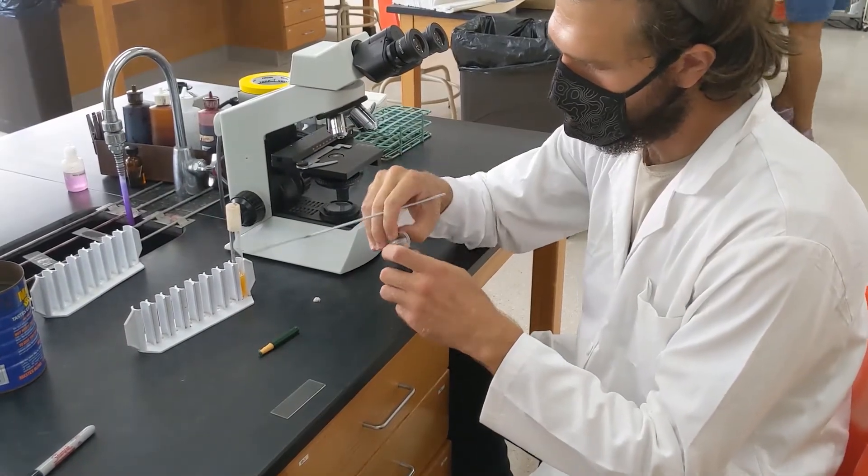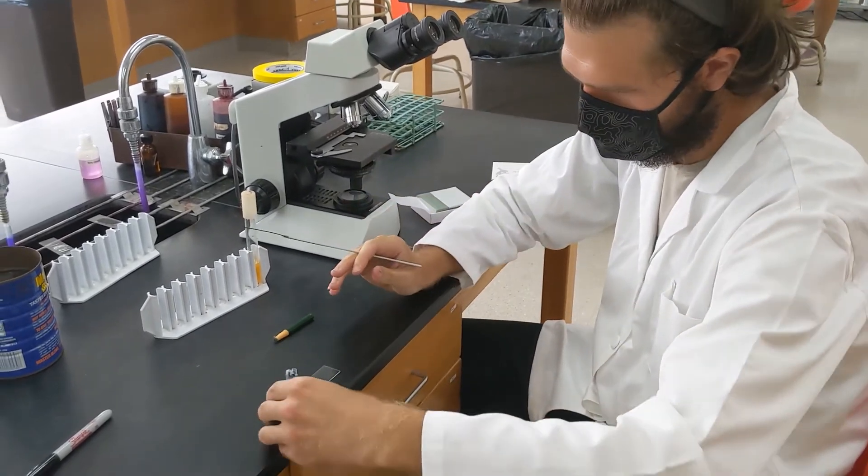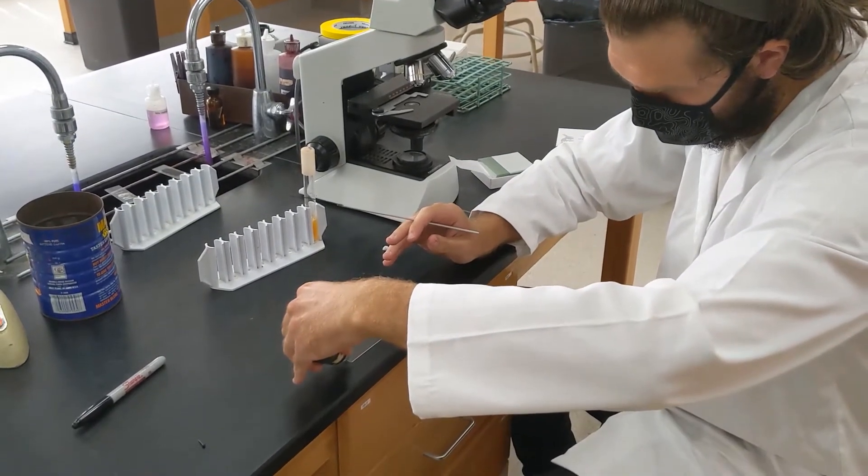So another method you can use to make indirect stain, you can take your nigrosin stain and put it on the very edge of the slide, like so.